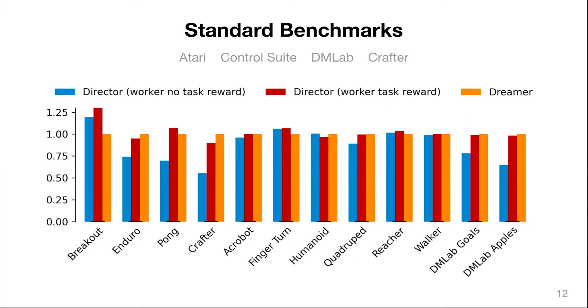We've seen that Director can solve sparse reward tasks where previous algorithms fail, but what about standard benchmarks where the reward is generally much more dense? We evaluate Director across a wide range of benchmarks including Atari games, the Crafter benchmark, continuous control from pixels, and 3D DM Lab environments.